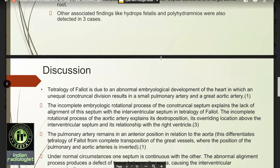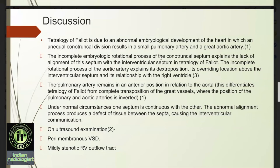Discussion. TOF is due to embryological development of the heart in which an unequal conotruncal division results in a small pulmonary artery and a large aortic artery. The incomplete embryological rotational process of the conotruncal septum explains the lack of alignment of the septum with the interventricular septum in Tetralogy of Fallot. The incomplete rotational process of the aorta explains its dextral position, its overriding location above the interventricular septum, and its relationship with the right ventricle. The pulmonary artery remains in an anterior position in relation to the aorta. This differentiates TOF from complete transposition of the great vessels, where the position of the pulmonary and aortic arteries is inverted.